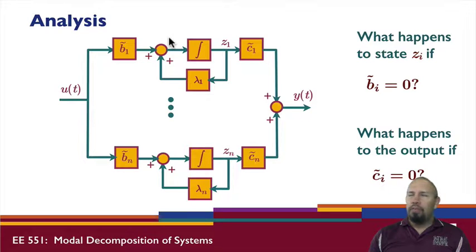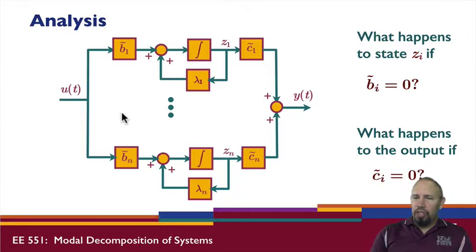Similarly, for observability, what happens if one of these guys is zero? For example, let's say this guy is zero. What does that mean? That means the output signal has no information coming from that state. I cannot see what's going on in that state by looking at the output. We're going to talk about something called observability that is exactly that property. Having it in this form allows us to look at those kinds of things.